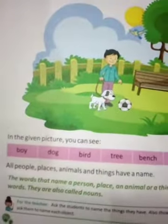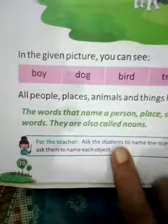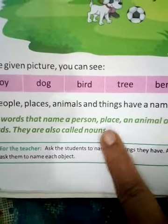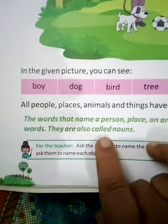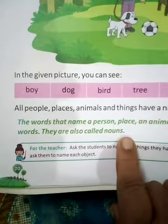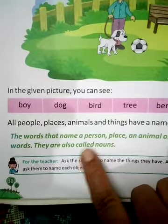In previous videos I have already explained naming words and noun, and we are doing some exercises in the book. What is a naming word? The words that name a person, place, an animal, or a thing are called naming words. They are also called nouns. Means all the names are called noun or naming words.